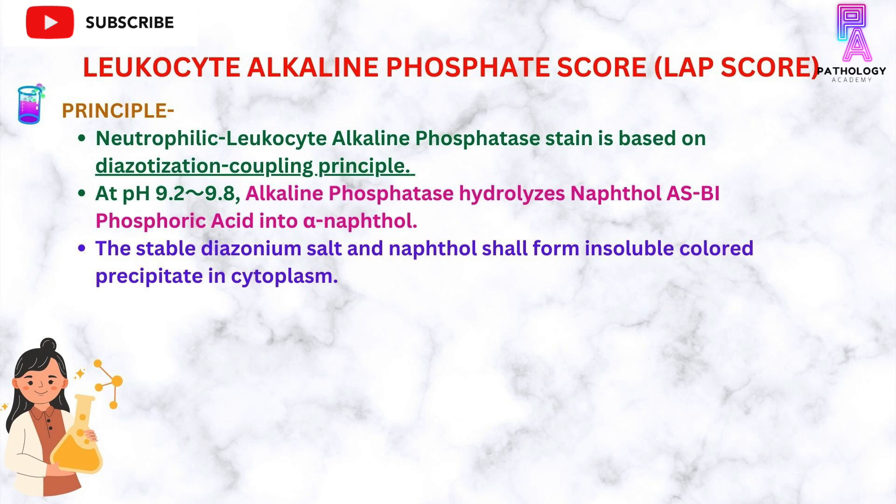The neutrophilic leukocyte alkaline phosphatase stain is based on the diazotization coupling principle, in which at pH 9.2 to 9.8, alkaline phosphatase hydrolyzes the naphthol AS-BI phosphoric acid into alpha-naphthol. The stable diazonium salt and naphthol then form an insoluble colored precipitate in the cytoplasm.